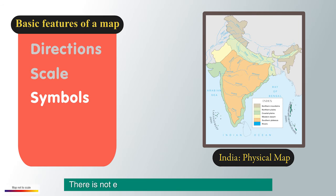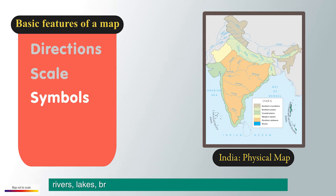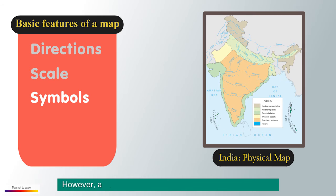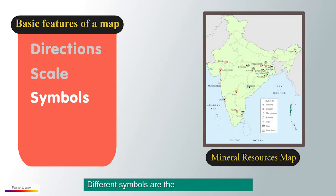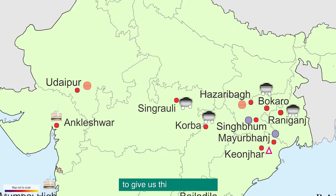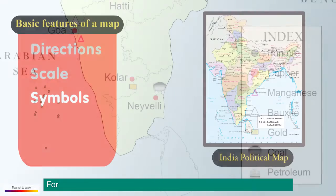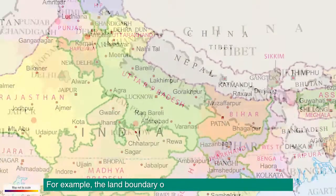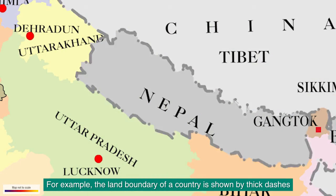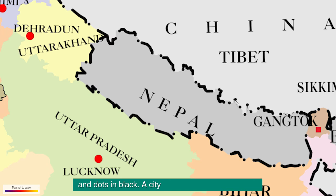There is not enough space on a map to show mountains, rivers, lakes, bridges, dams, temples, churches, and railway tracks. However, a map without this information would not be useful. Different symbols are therefore used on a map to give us this information. For example, the land boundary of a country is shown by thick dashes and dots in black, and a city is marked by a small circle.